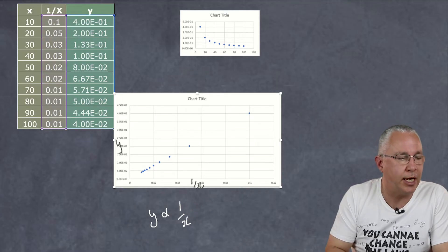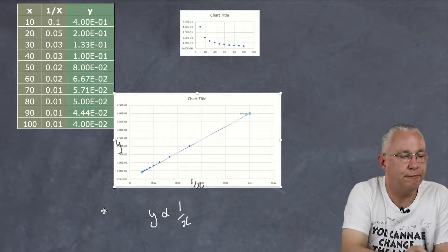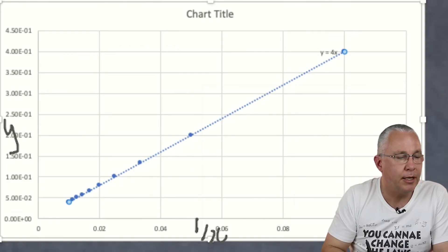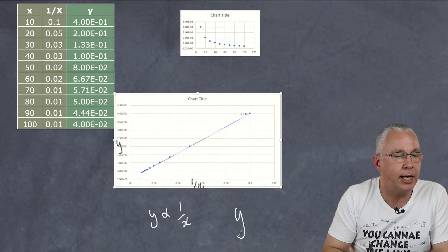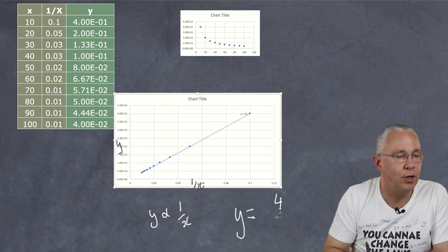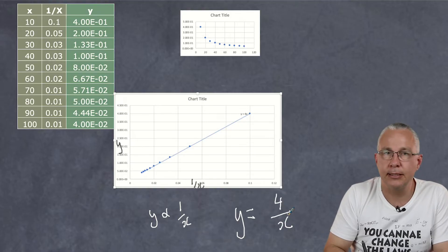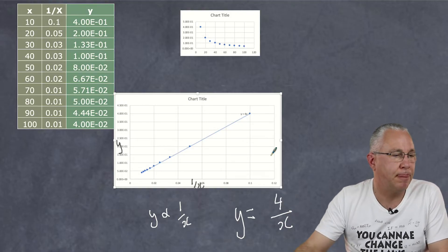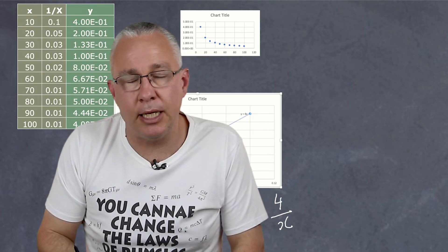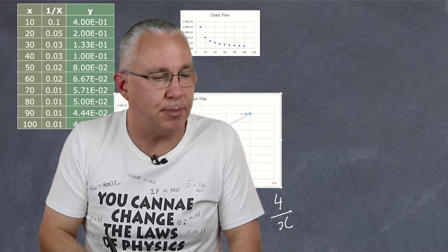And then if I work out the trend line I'm going to get a value of 4 which tells me that my relationship is Y is equal to 4 over X. An inverse relationship. Now in physics specifically what are some of the inverse relationships you may come across?